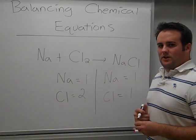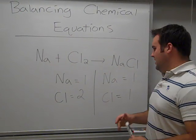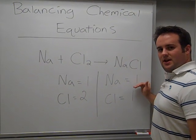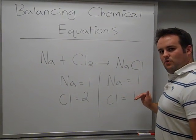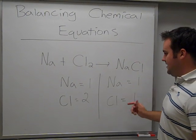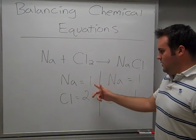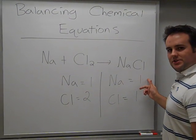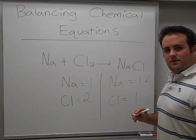What you want to do is start off and go down in order. You want to start with the first element, make sure they're balanced, and then work your way down. So let's look at the amount of sodiums on each side. We have one sodium on the reactant side, one sodium on the product side. This element is balanced out.